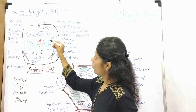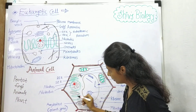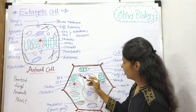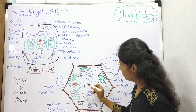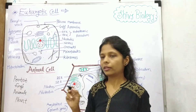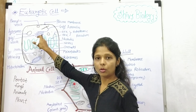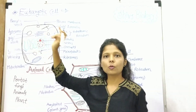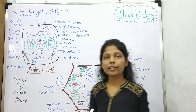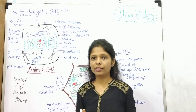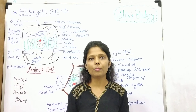This is the endoplasmic reticulum attached to the nucleus. Then the mitochondria and chloroplast. Then this is the Golgi. The endoplasmic reticulum, Golgi body, lysosomes, and vacuoles are interconnected to each other — that's why they are involved in the endomembrane system.